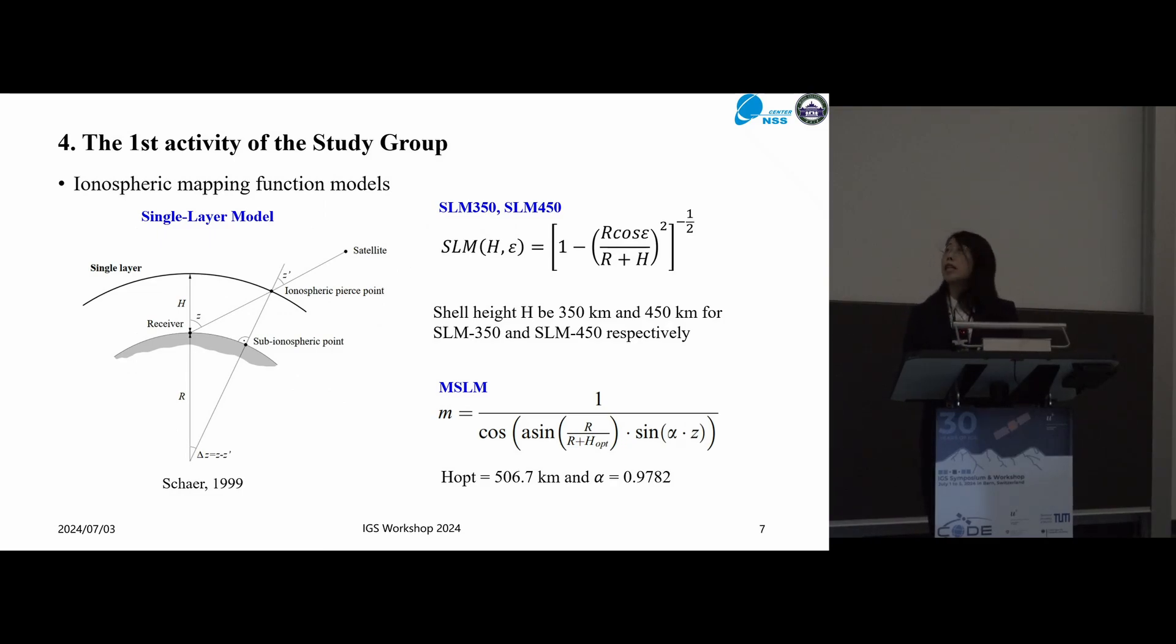The first type of ionospheric mapping function models are the single-layer models. We will include the single-layer models with shell height of 350 km and 450 km, and also the modified single-layer models.